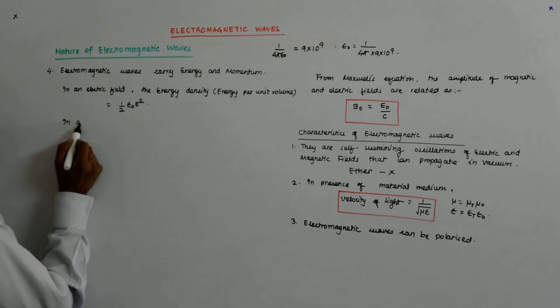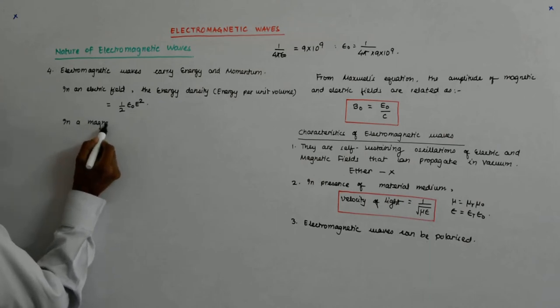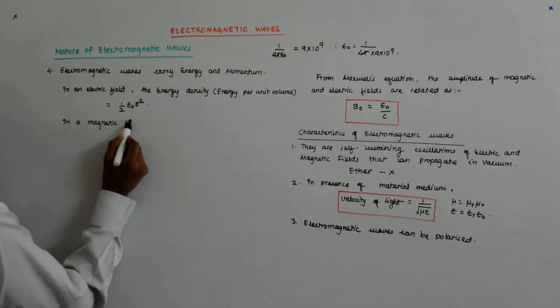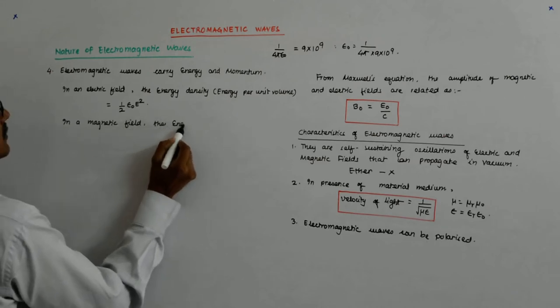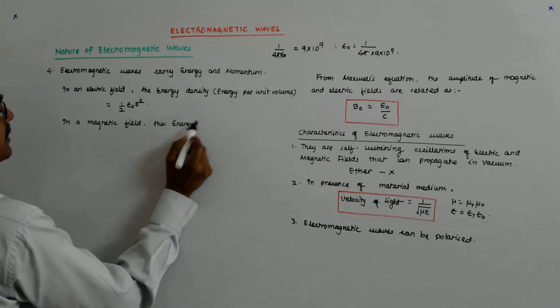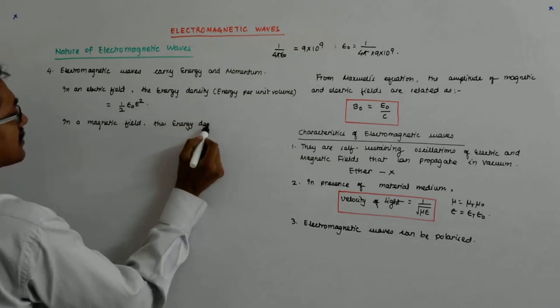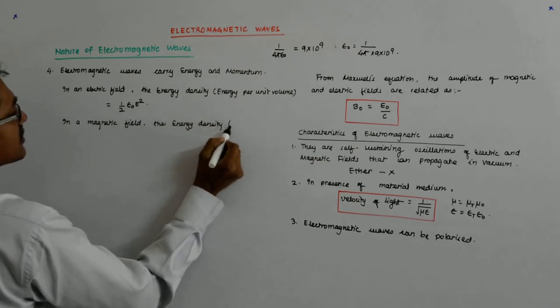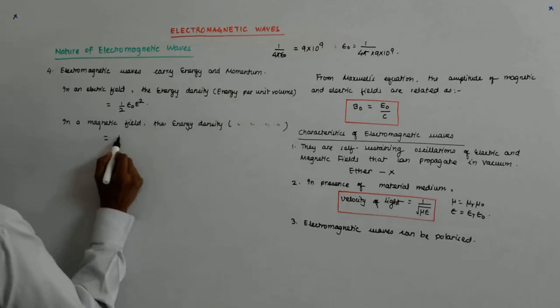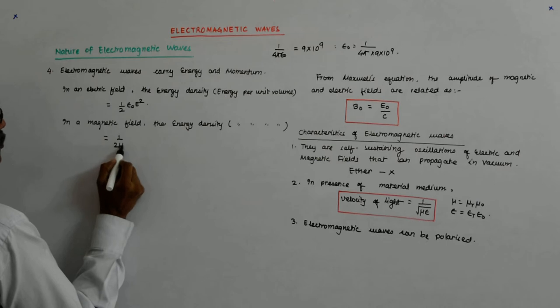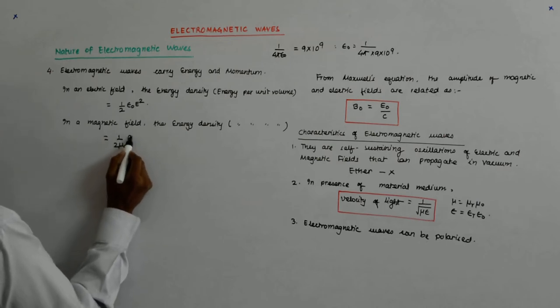Energy is carried in the electric field. And in a magnetic field, the energy density, again the same thing, which is defined as energy per unit volume, is 1 by 2 mu naught B square.